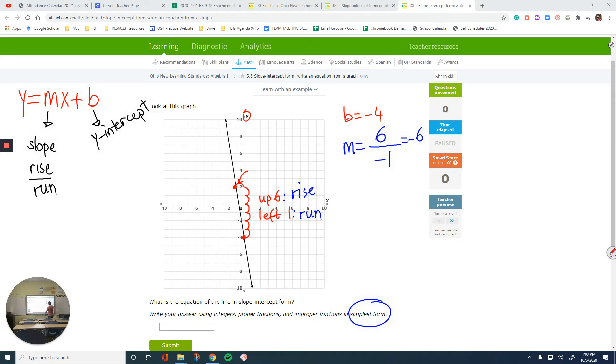Remember, our general form was y equals mx plus b. y is the variable, m we just figured out was negative 6, and then x plus b. b is negative 4. But that doesn't look right, like plus minus 4. We don't, that doesn't look right. So let's just simplify it a little further: y equals negative 6x minus 4. That would be our final answer for this question.